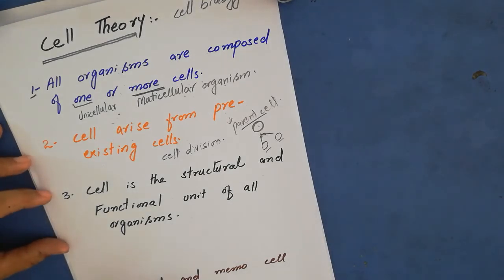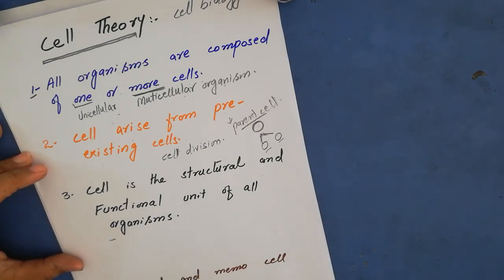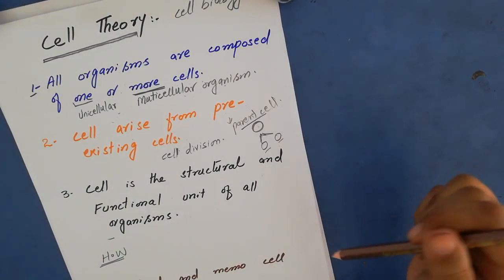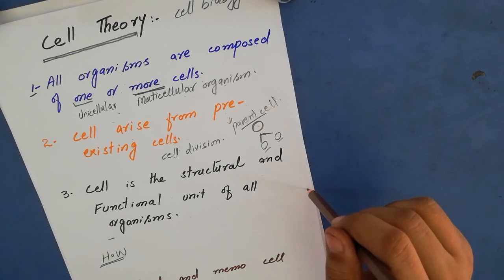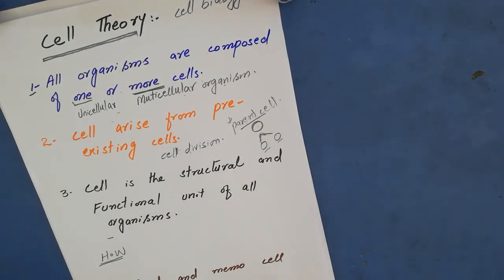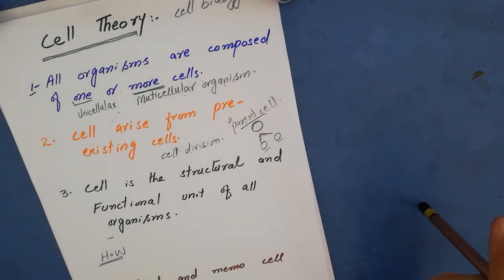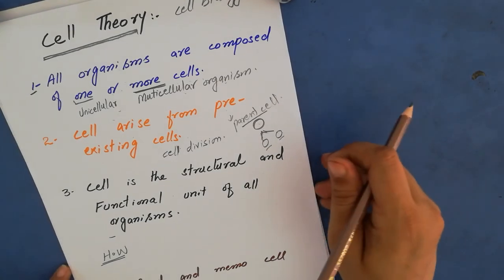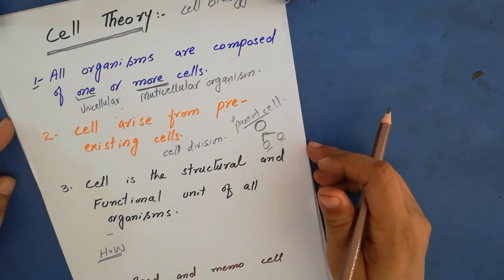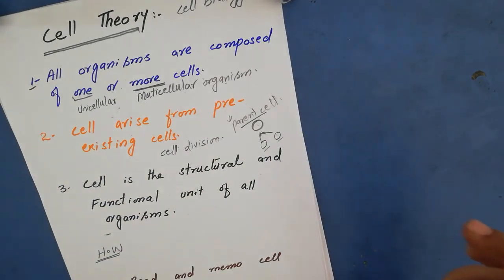Our lecture is complete. Your homework: first, listen to the lecture carefully, then read it from your books and memorize the cell definition. Then draw a neat and labelled diagram of plant and animal cells from your class eight science book, write the date on your homework, and submit it when asked in your college. Thank you.